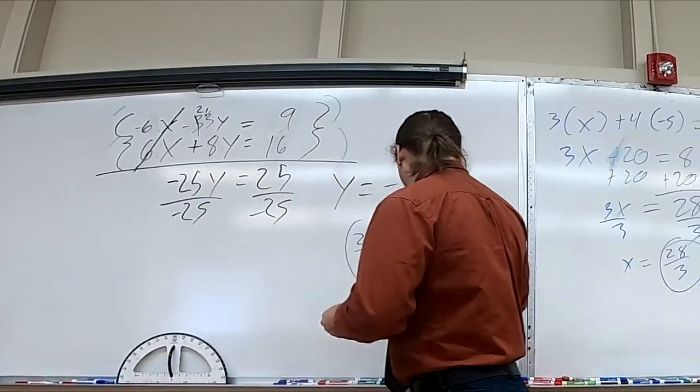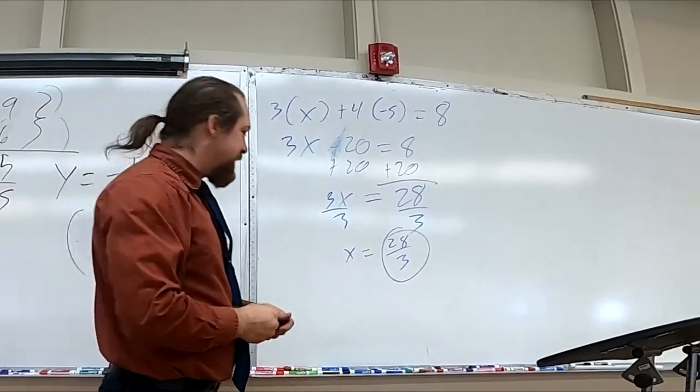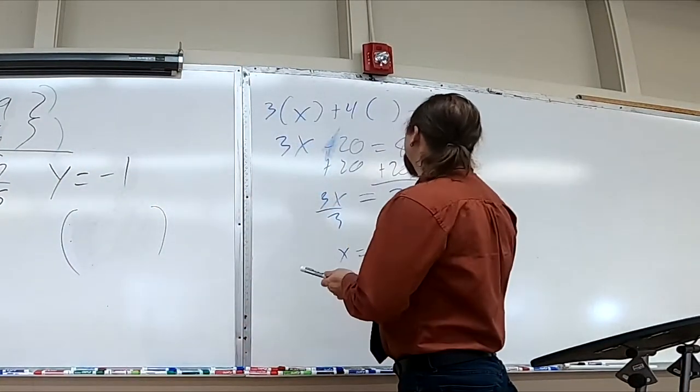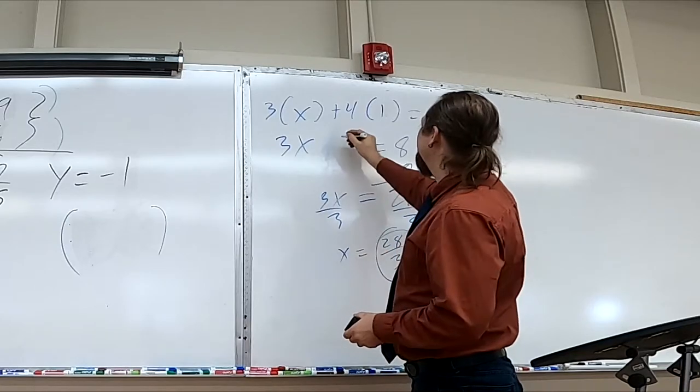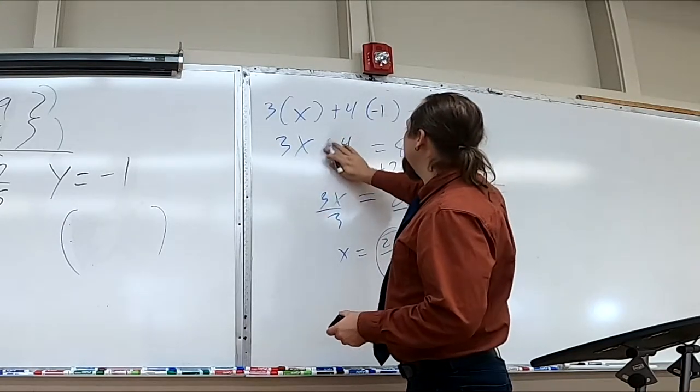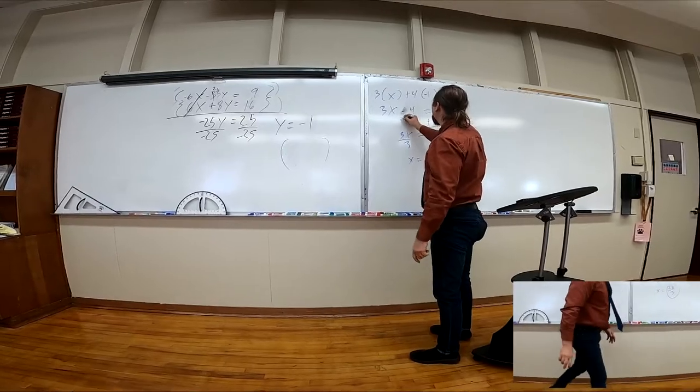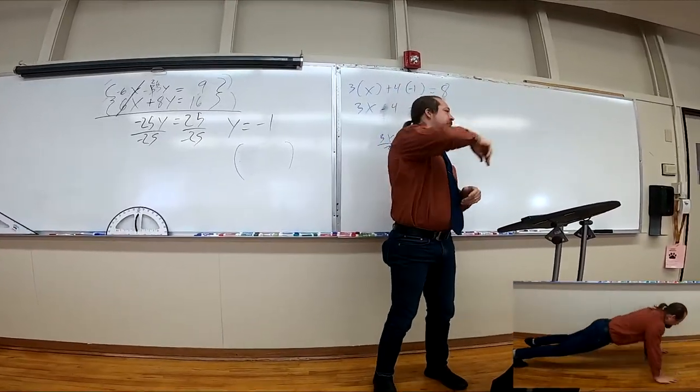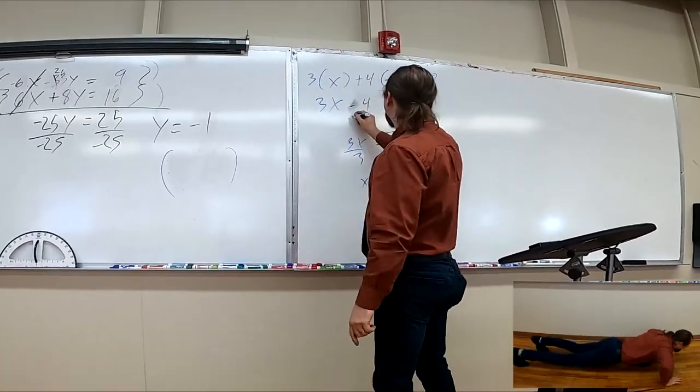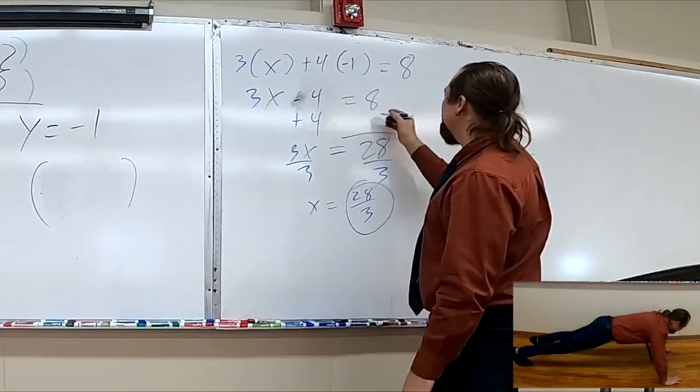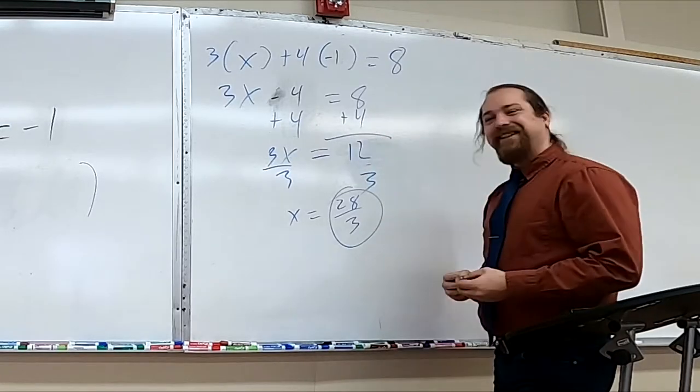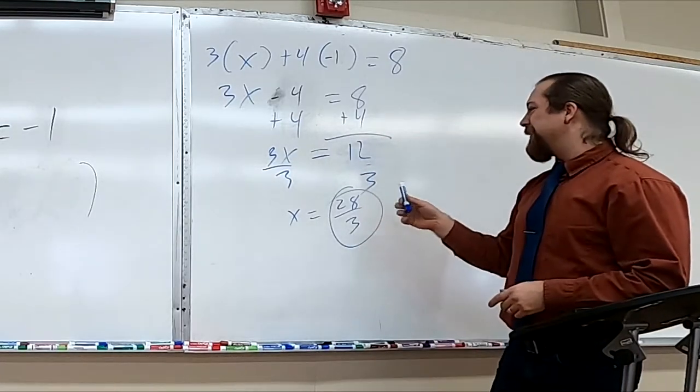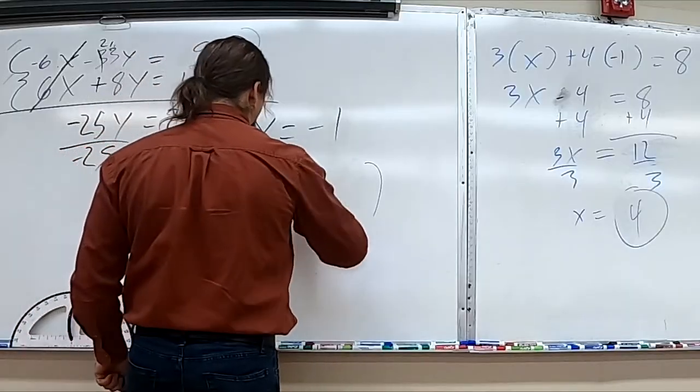Alright much happier for our final result. Let's go back over here. Now change this to a 1. Alright so that's gonna be 4 times negative 1 which is gonna give you negative 4. Negative 1, right? Get it right Mr. Moore. Alright so now I'm gonna add 4 to both sides which is gonna give me 8 plus 4 which is indeed finally 12. Alright so from here 12 divided by 3 that's gonna give me 4 comma negative 1.